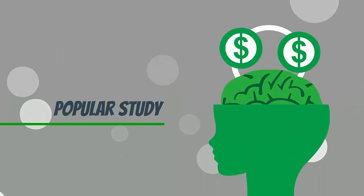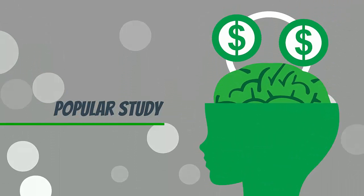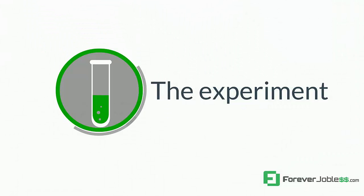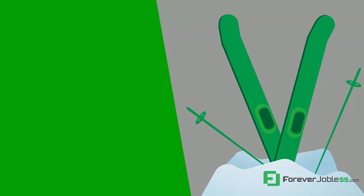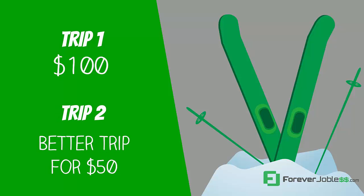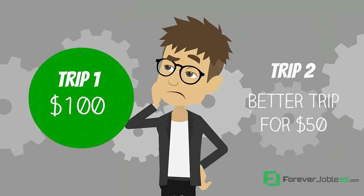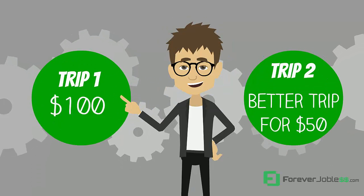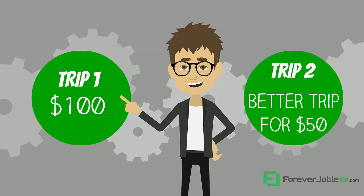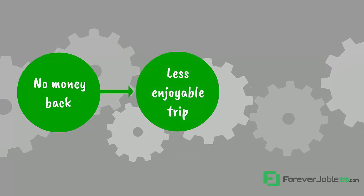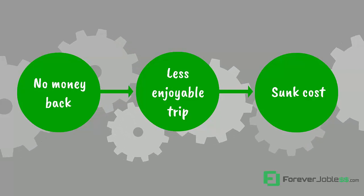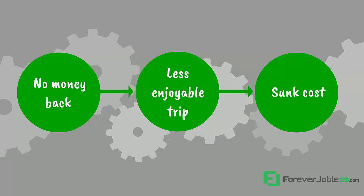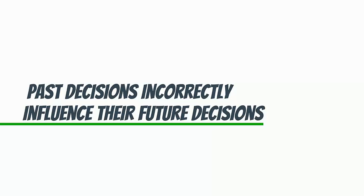There was a popular study done a long time ago that confirmed how strong a hold sunk cost fallacy has on our minds. Subjects were asked to assume they had purchased tickets for two ski trips — one for $100 and a second, even better trip, for $50. The subjects soon realized the two trips actually overlapped, so they could only go on one and neither ticket could be refunded or resold. The majority chose to attend the less enjoyable trip because it was more expensive. The loss seemed greater to them, even though there was no actual loss. It was just the sunk cost fallacy playing tricks on their mind — they couldn't get the money back from either trip and they still chose not to attend the trip they would enjoy most. They let their past decisions incorrectly influence their future decisions and future happiness.